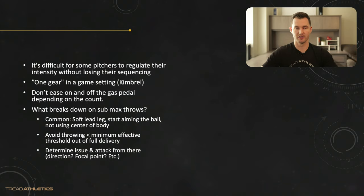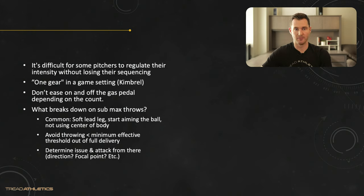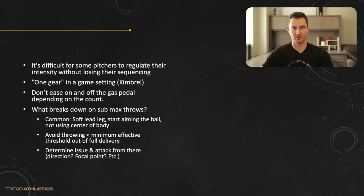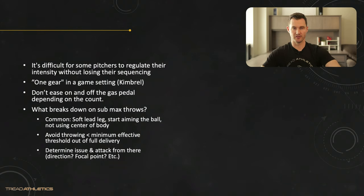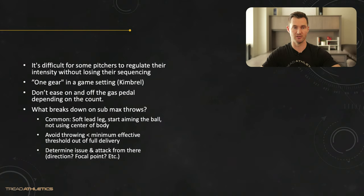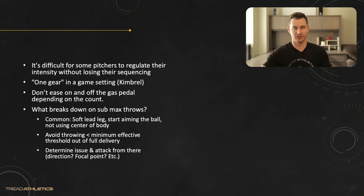That's a quick band-aid for the issue. But also look at your sub-maximal throws, catch play, and long toss to see what's breaking down. Common issues when guys throw at super low effort are a really soft lead leg block or aiming the ball. This is especially common in rehab throwing programs — at 40-50 mph you're throwing out of your full delivery, which forces you to actively take your foot off the gas, slow down your lead leg, and teach yourself how to throw slowly. Essentially, you're teaching your arm to take over the throw.